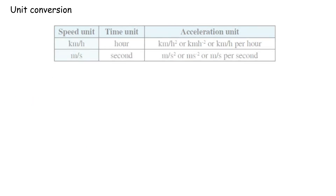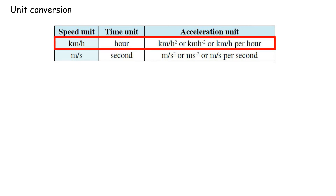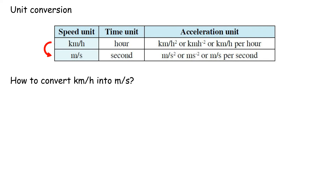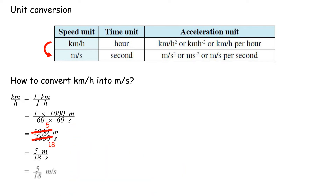Unit conversion: Acceleration equals speed over time. Kilometer per hour over hour equals km over hour squared, or km·hour to the power of negative 2, or kilometer per hour per hour. Acceleration equals speed over time: meter per second over second equals m over second squared, or meter·second to the power of negative 2, or meter per second per second. To convert kilometer per hour into meter per second: 1 kilometer per hour equals 1,000 meters over 3,600 seconds, equals 5 meters over 18 seconds.